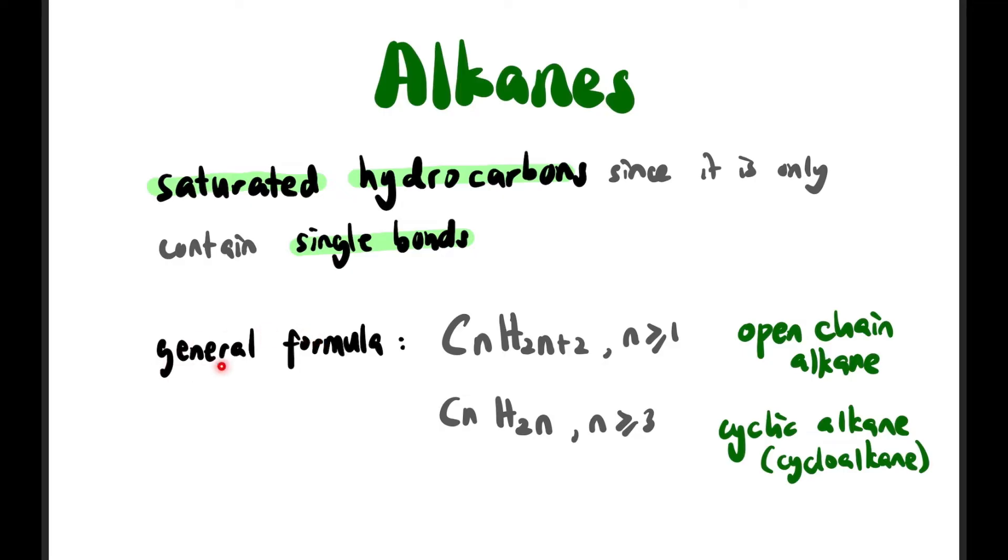General formula of alkanes are two: first, CnH2n+2 where n is equal to or more than one. This is for open chain alkanes. For cycloalkanes, it's CnH2n where n is equal to or more than three.